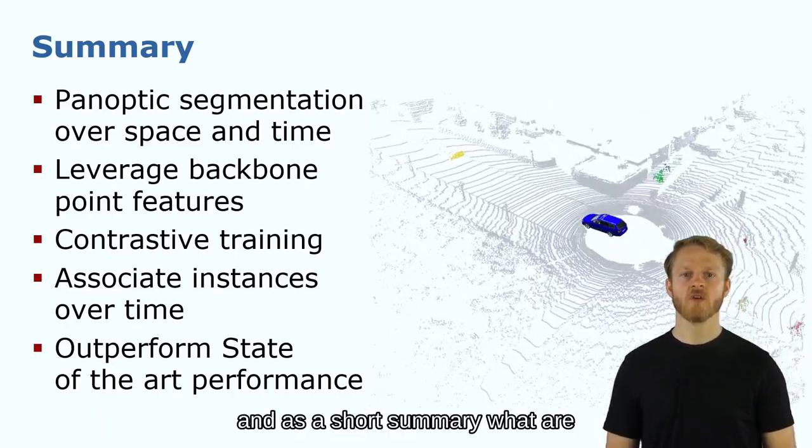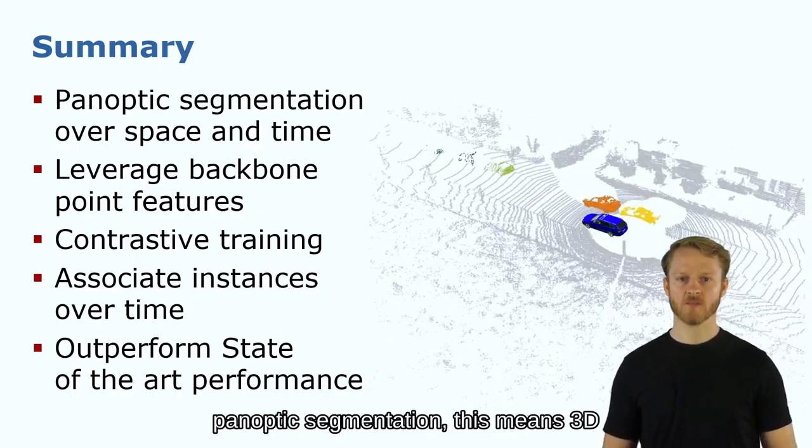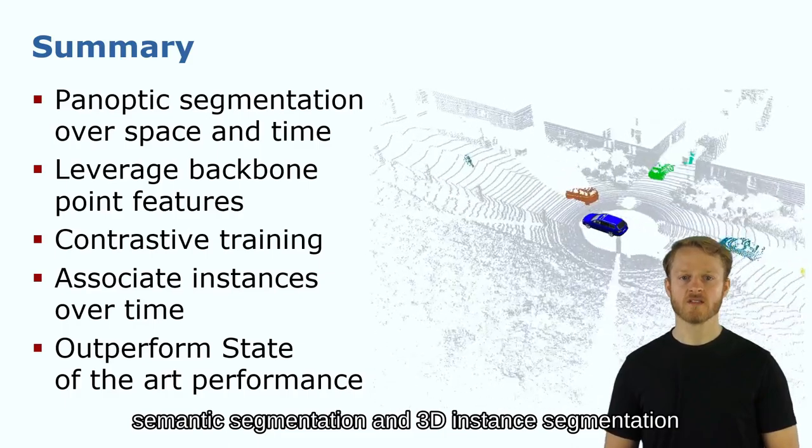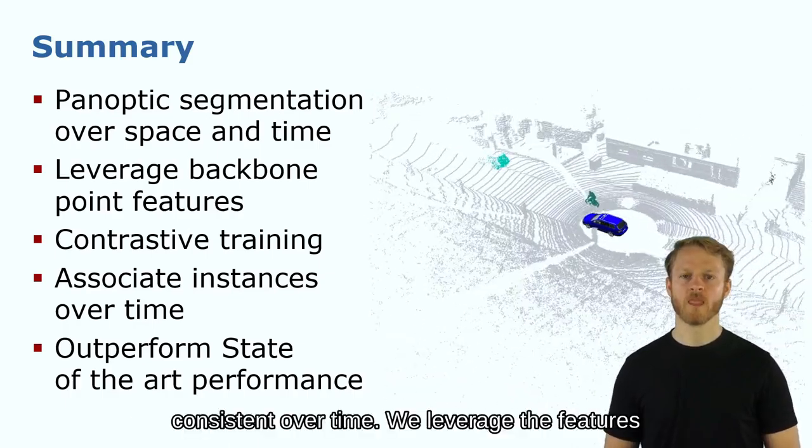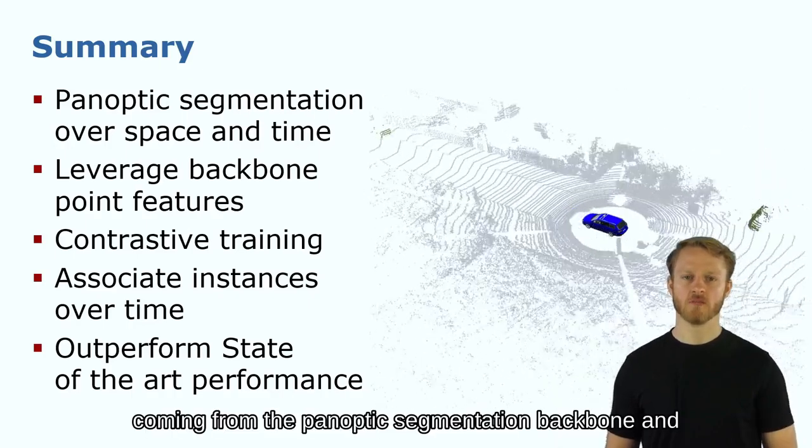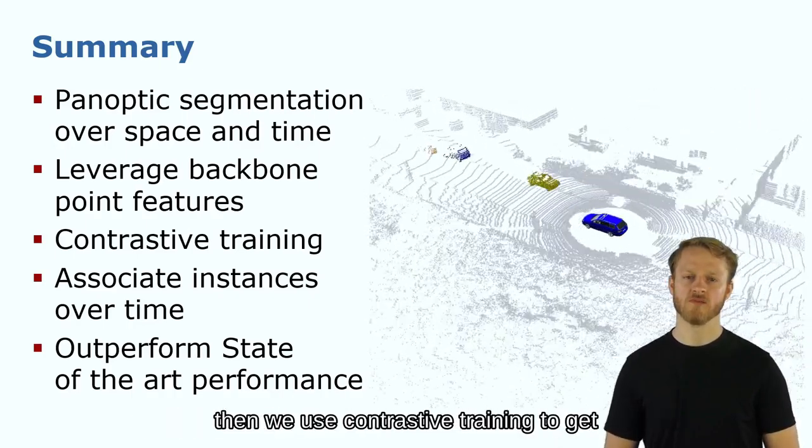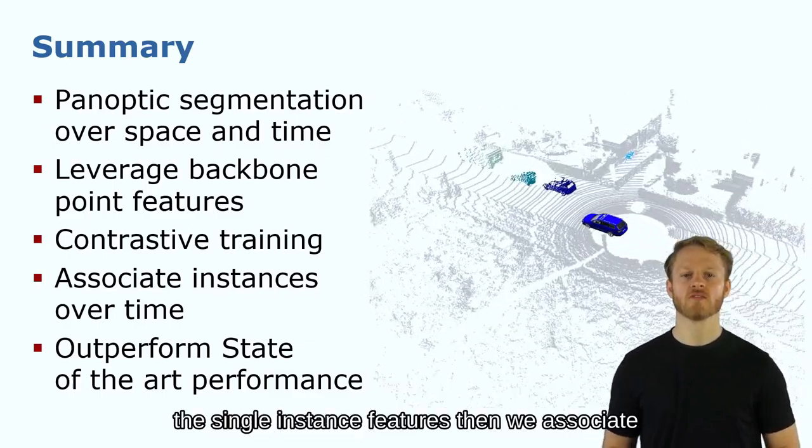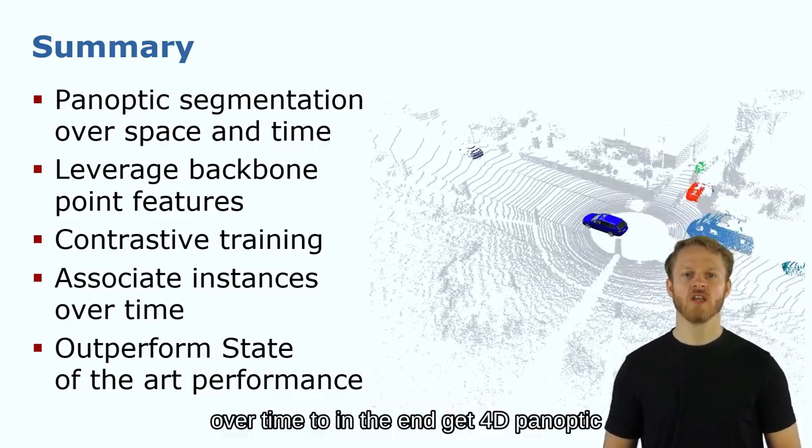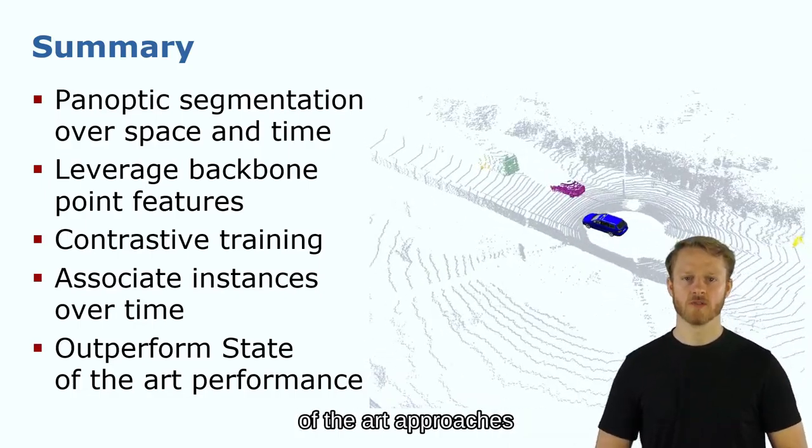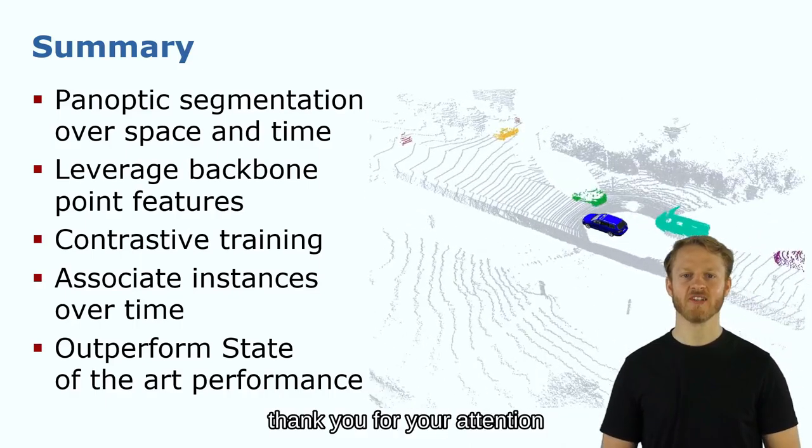And as a short summary, what we do in this work is 4D panoptic segmentation. This means 3D semantic segmentation and 3D instance segmentation consistent over time. We leverage the features coming from the panoptic segmentation backbone and then we use contrastive training to get the single instance features. Then we associate the instances over time to in the end get 4D panoptic segmentation and outperform previous state-of-the-art approaches. Thank you for your attention.